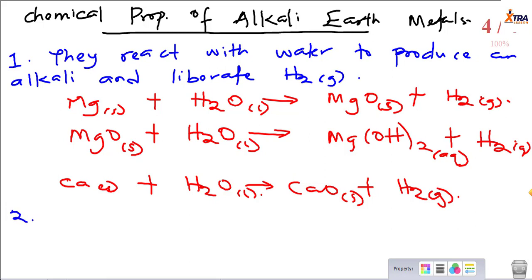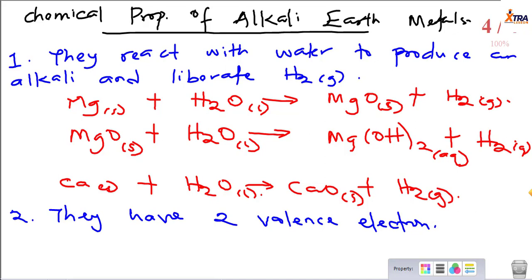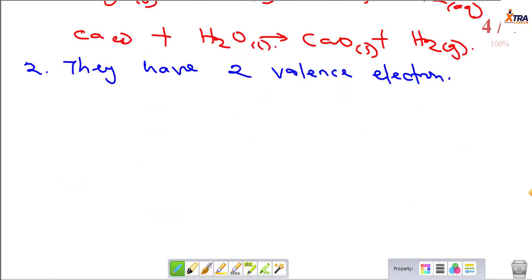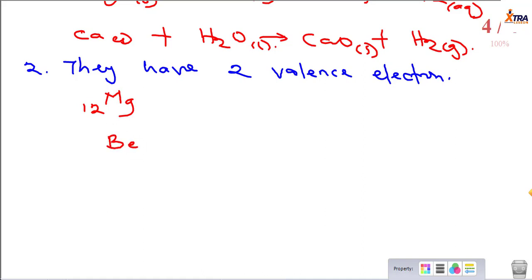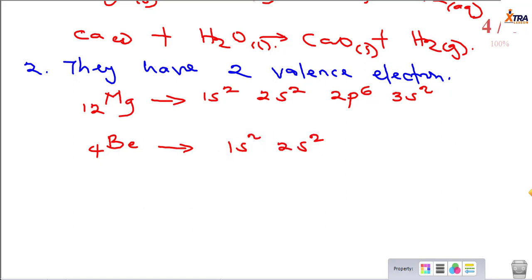The second chemical property: by virtue of the number of outermost electrons they have, they are put in group 2, so they have 2 valence electrons. We can prove that: magnesium has 12 protons and 12 electrons, with electronic configuration 1s², 2s², 2p⁶, 3s². Beryllium has 4 electrons with configuration 1s², 2s². Looking at this, the valence electron of magnesium has 2 electrons, and the valence electron of beryllium also has 2 electrons.